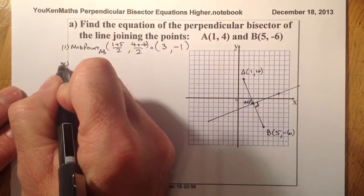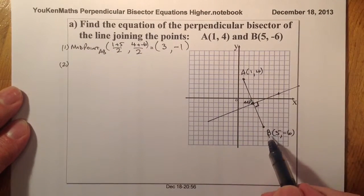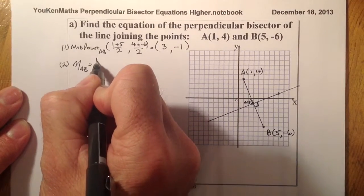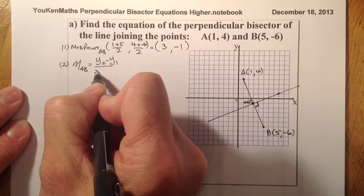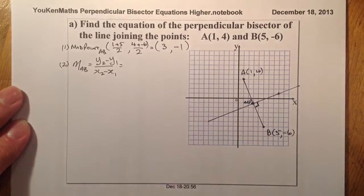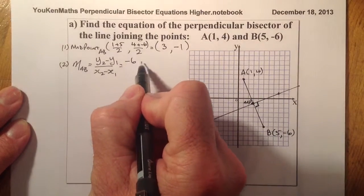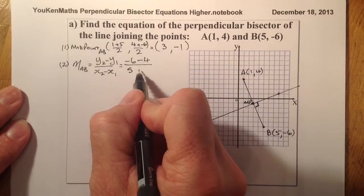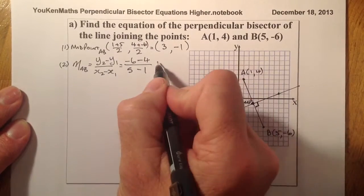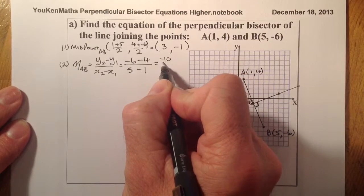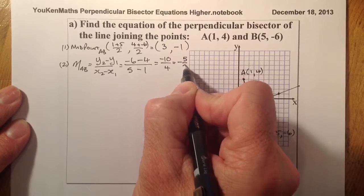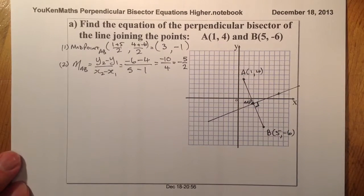The second thing I said I would do is find the gradient between the given points. The gradient of AB equals y2 minus y1 all over x2 minus x1. Substituting in: that's minus 6 minus 4 on top, and 5 minus 1 on the bottom. That gives minus 10 over 4, which simplifies to minus 5 over 2. That's the gradient of line AB.